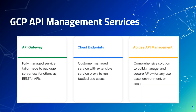Cloud Endpoints is another service for API management. It uses an Nginx-based proxy. Cloud Endpoints is a user-managed service, whereas API Gateway is a fully managed service, and that's the main difference. Both of them support the same open API definition format. Another difference is that API Gateway can route a request to multiple backends, but Cloud Endpoints can route traffic only to a single backend.